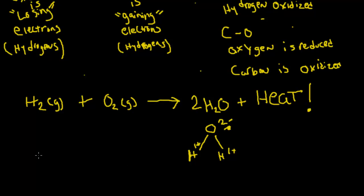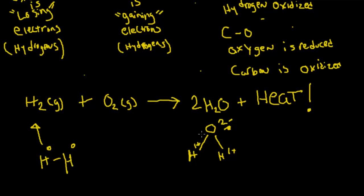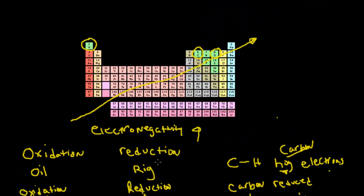Let's talk about a neutral oxidative state. Up here we have a hydrogen bonded with a hydrogen. Each one of these would have a zero oxidative state because we're equally sharing the electrons — they're in a happy state and neither one of them is hogging electrons from the other one. So that is oxidation and reduction in a nutshell.